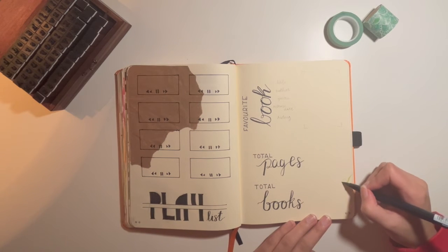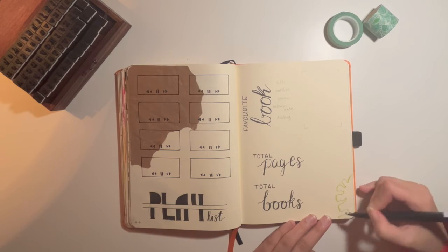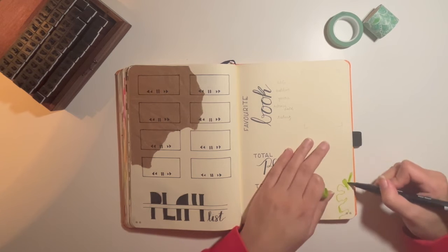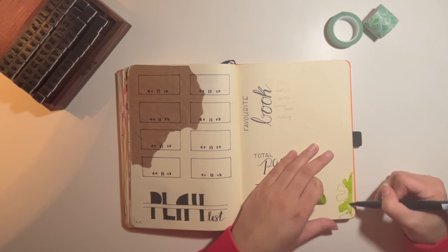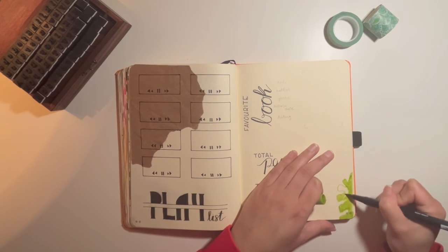And then just to add some color, I'm putting in another leaf drawing in the corner where there's space.